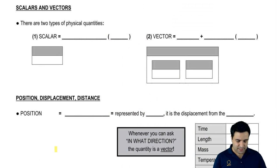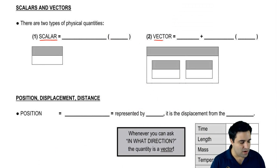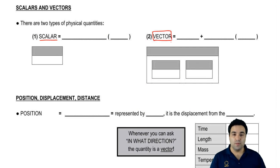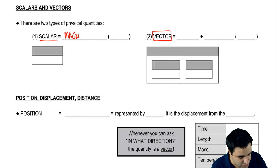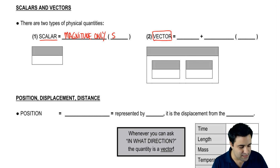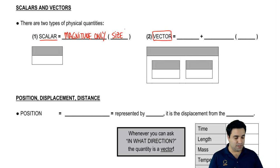So when you measure things in physics, they can be either a scalar or a vector. And a vector is what we want to focus on, but it's important to make the distinction between the two. So a scalar is a physical quantity that has magnitude only. And magnitude is just a fancy word for size — how big something is or how long something is.